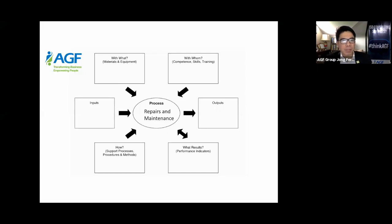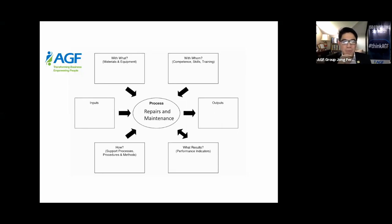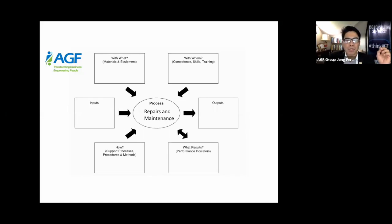The first part of the Turtle Diagram is to populate it — fill it out with details based on the identified procedure. Our first question: after identifying the repairs and maintenance process, what do you think are the inputs? How does this procedure begin? You can type in the chat box. From my end, I'd put job order requests, the preventive maintenance schedule, and inspection reports as inputs.